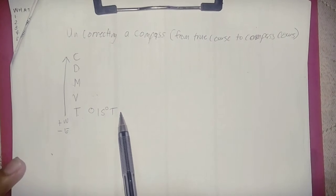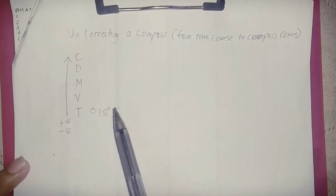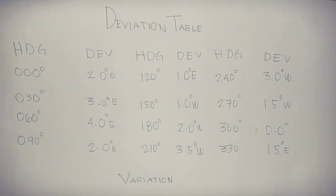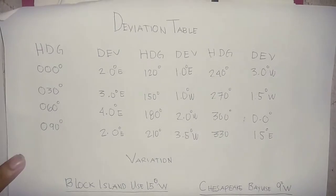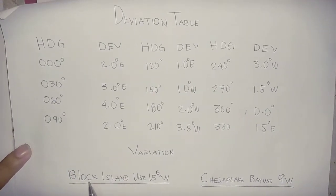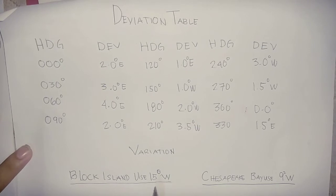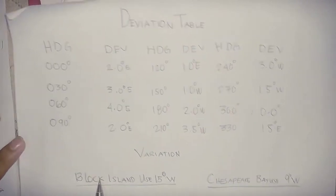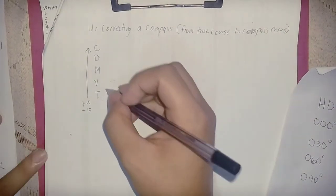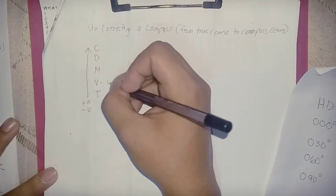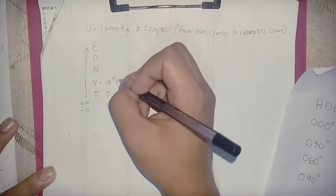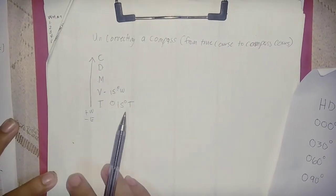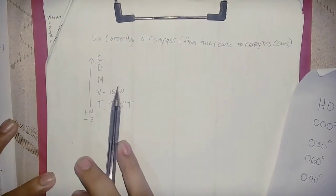Our variation is unknown, so let's check the deviation table. From the deviation table, the variation for Black Island is 15 degrees West. We copy the 15-degree West value. The variation is 15 degrees West, and going from true toward north the compass sign is positive.